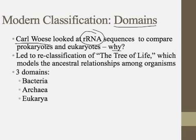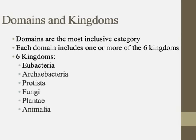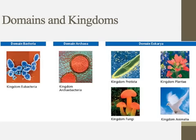Woese placed the kingdoms into three different domains. The three domains are Bacteria, Archaea, and Eukarya (the eukaryotes). Domains are the newest and most inclusive — most broad — category, and they contain the six kingdoms: Eubacteria, Archaebacteria, Protists, Fungi, Plants, and Animals. The domain Bacteria contains only the kingdom Eubacteria. The domain Archaea contains only the kingdom Archaebacteria. The domain Eukarya contains everyone else: Protists, Fungi, Plants, and Animals.